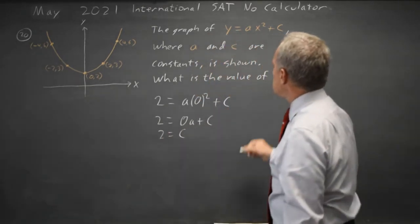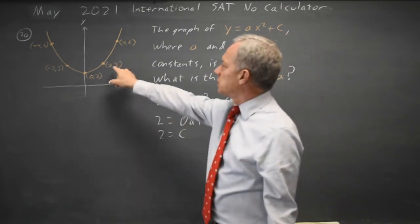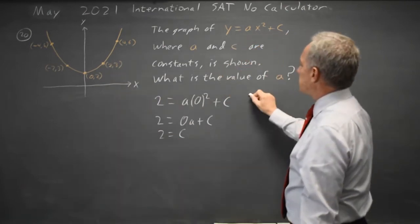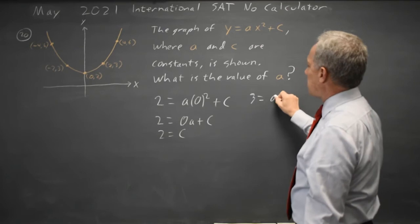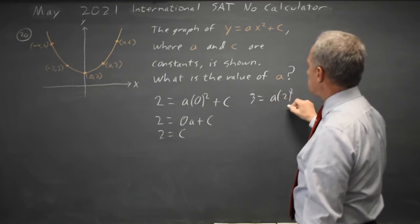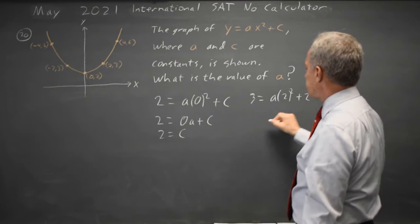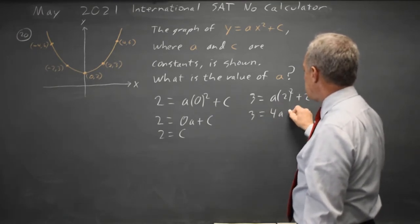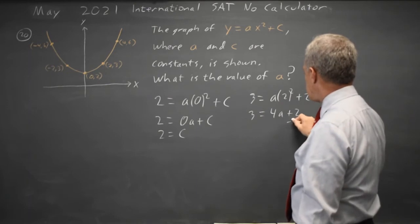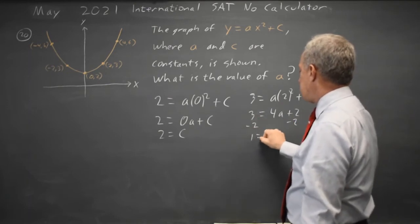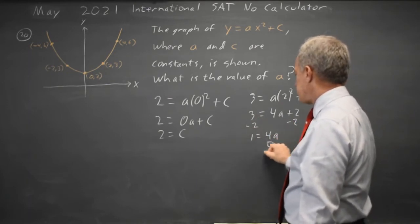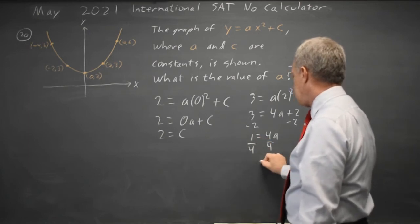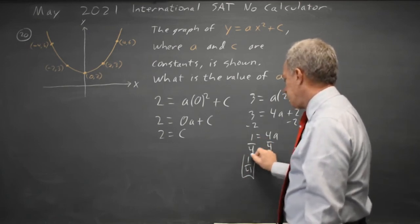Now that I know c, if I substitute another point like (2, 3) in, the y value is 3 equals a times 2 squared plus c, where c we now know is 2. So 3 equals 2 squared is 4, 4a plus 2. We subtract 2 from both sides, 1 equals 4a, divide both sides by 4, and a equals 1 fourth or 0.25.